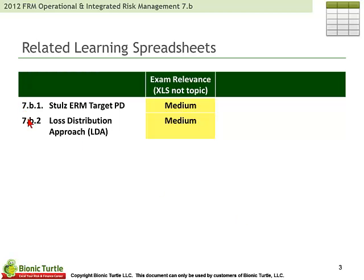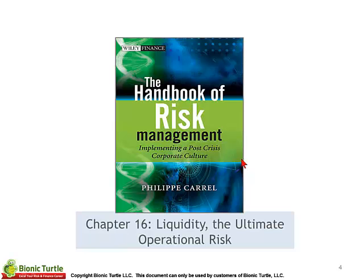And then related learning spreadsheets as usual: 7B1 and 7B2. 7B1 illustrates the idea of setting the equity cushion based on a rating assignment and a target probability of default — that's in the Stoll's NOCO paper. And 7B2 illustrates some of the loss distribution approaches, which is the actuarial approach to operational risk that probably predominates in terms of operational risk approaches.